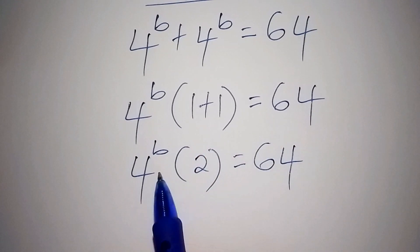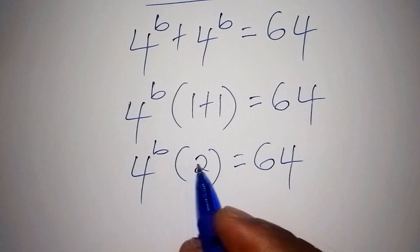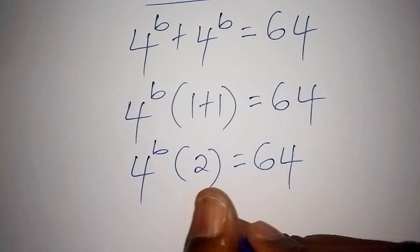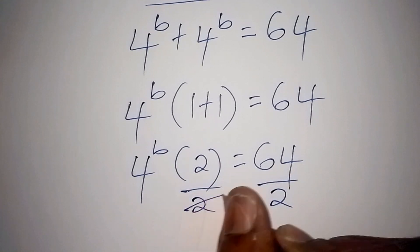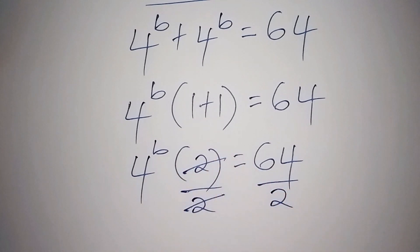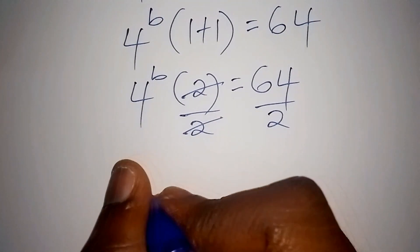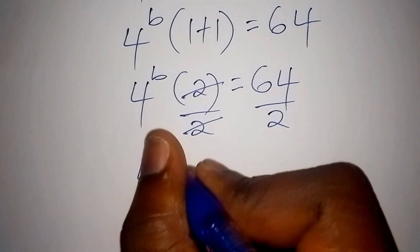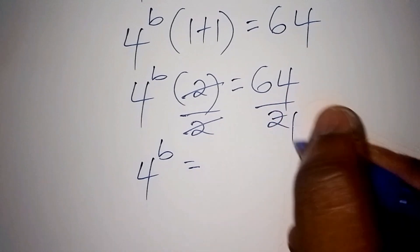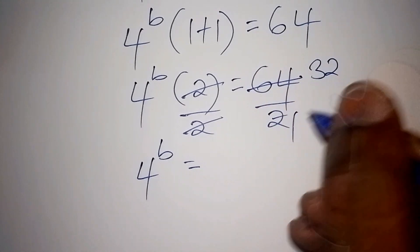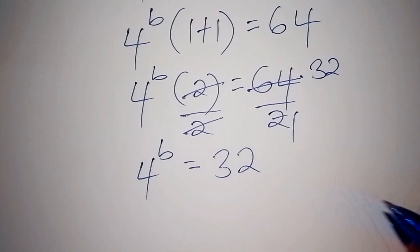We can decide to isolate 4 to the power of b by dividing both sides by 2. So 2 divided by 2 shall cancel, and now 4 to the power of b is equals to 64 divided by 2, which is 32.